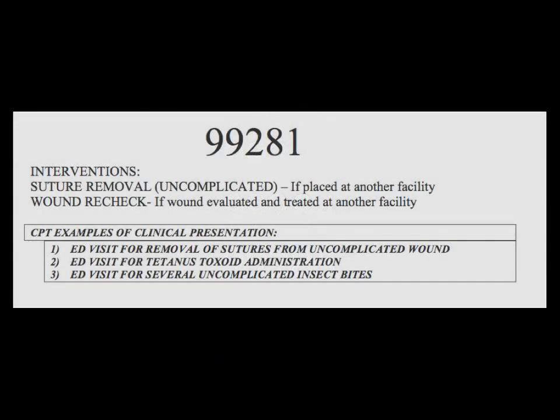Code 99281 represents the lowest possible billable code for a patient's emergency department visit. It usually represents minor, self-limited problems — a problem that runs a definite and prescribed course, transient in nature, and not likely to permanently alter health status, or has a good prognosis with management and compliance. These include interventions like suture removal (uncomplicated), wound rechecks, tetanus toxoid administration, vaccination administration, and uncomplicated insect bites.